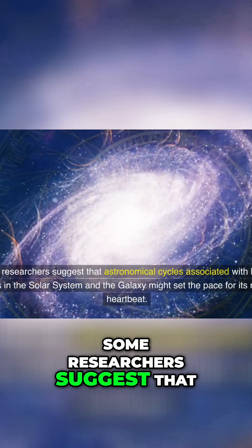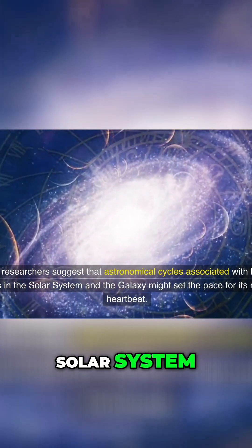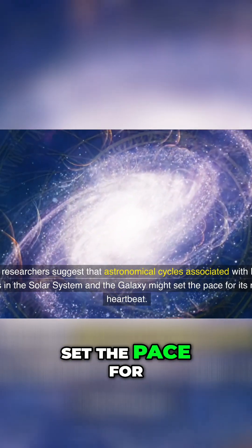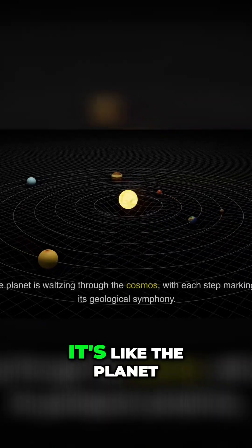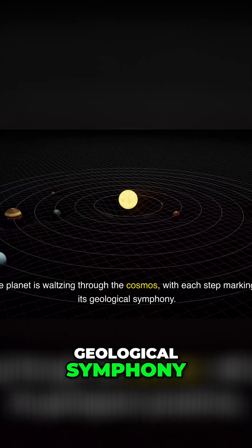Some researchers suggest that astronomical cycles associated with Earth's motions in the solar system and the galaxy might set the pace for its rhythmic heartbeat. It's like the planet is waltzing through the cosmos, with each step marking a beat in its geological symphony.